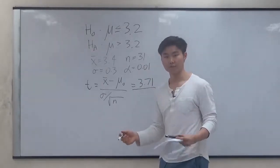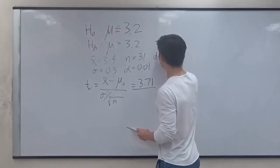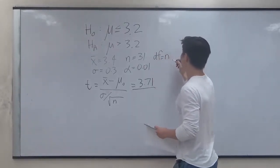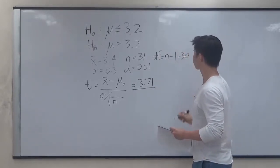And the degrees of freedom is very simple, it's just the sample size minus 1, which is equal to 30.